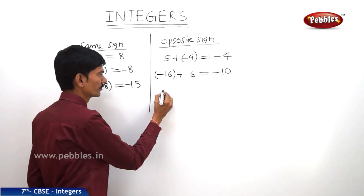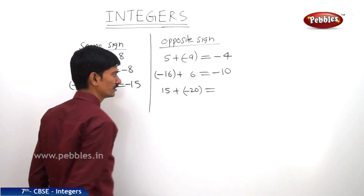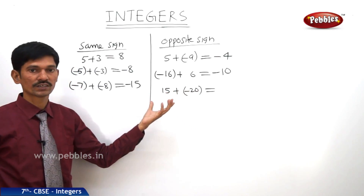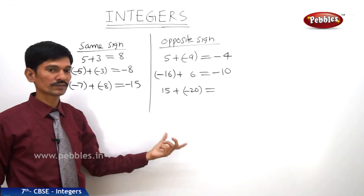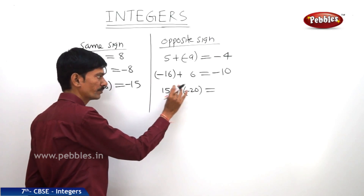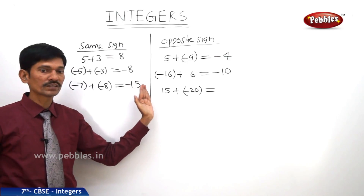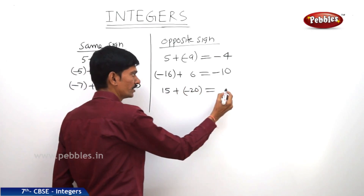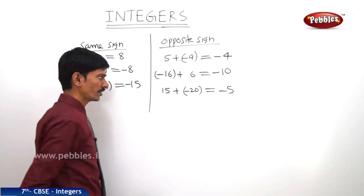Another example: 15 plus minus 20. Here 15 has a plus sign and 20 has a minus sign, so the two integers have different signs. If two numbers have the same sign, we do addition; if they have opposite signs, we do subtraction. Subtract the smaller from the bigger: 20 minus 15 equals 5. The bigger number 20 has a minus sign, so the result is minus 5. Therefore, 15 plus minus 20 equals minus 5.